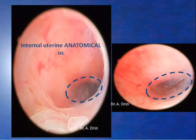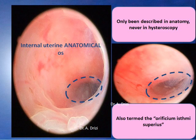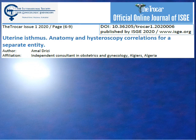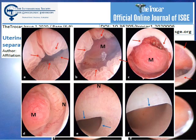The anatomical ostium has only been described in anatomy, never in hysteroscopy. It is also termed the ostium isthmi superius. In an article published in Trocar's first issue in December 2020, this fourth ostium is demonstrated for the first time in the literature, thus clearly delimiting the uterine isthmus as a separate entity.